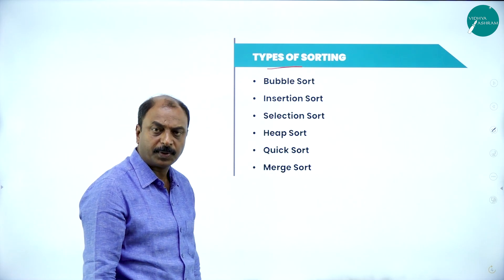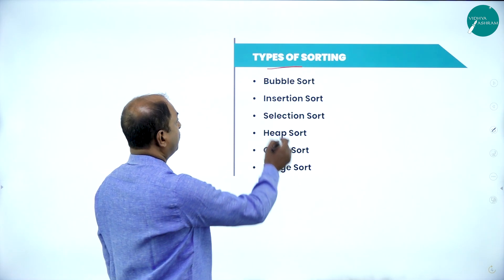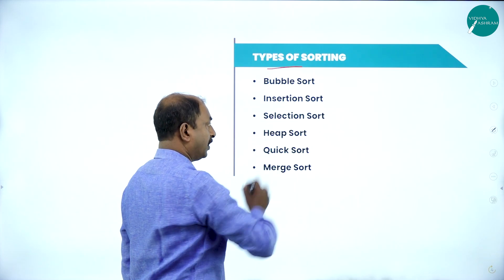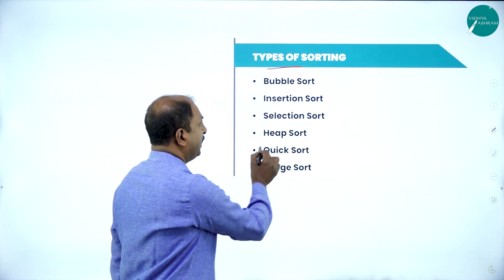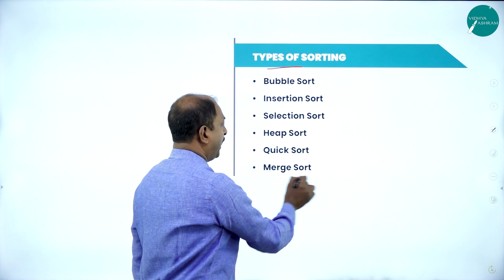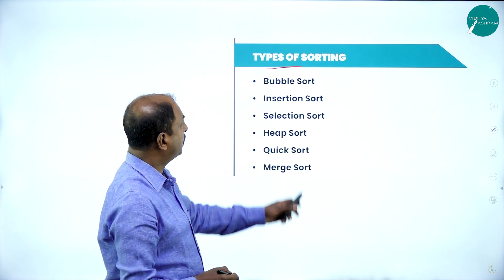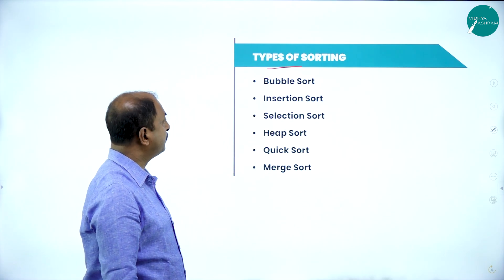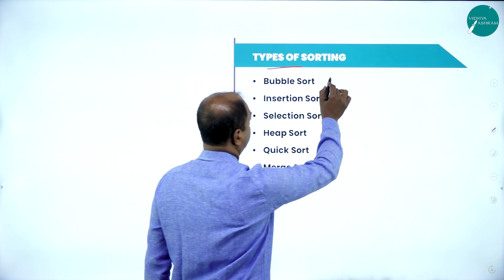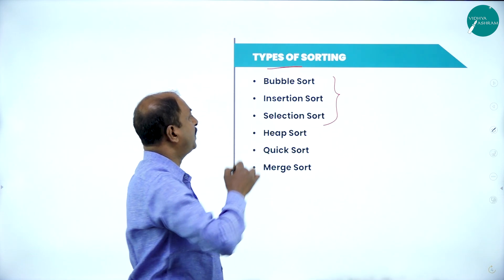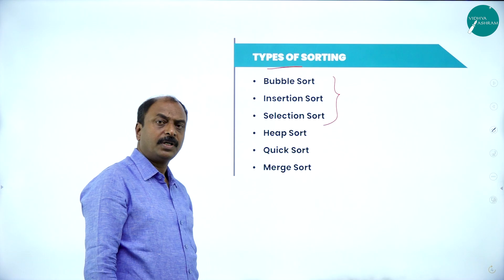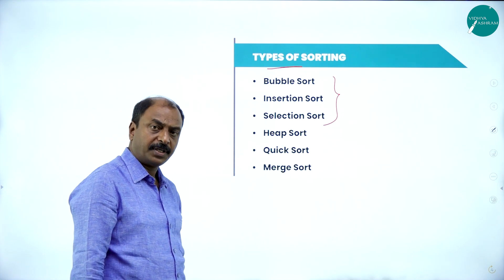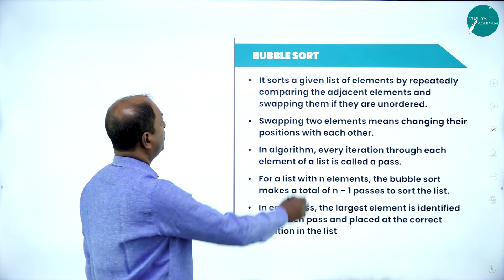Now let us see what are all different types of sorting with respect to programming concept. They are: bubble sort, insertion sort, selection sort, heap sort, quick sort, and merge sort. These are all different types of sorting, but as per your syllabus we are going to discuss only the first three types of sorting.